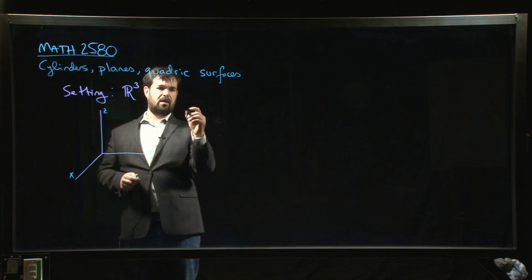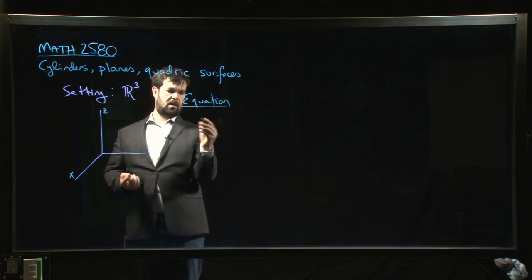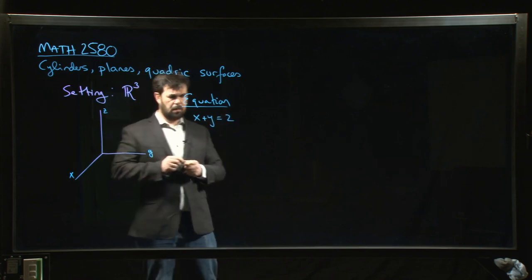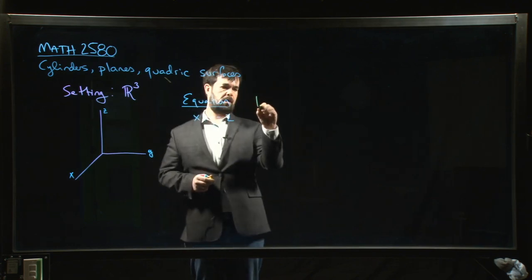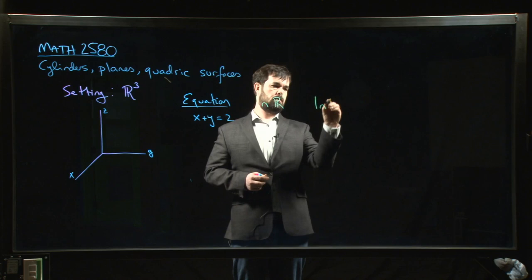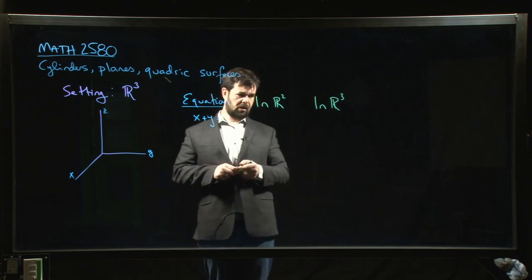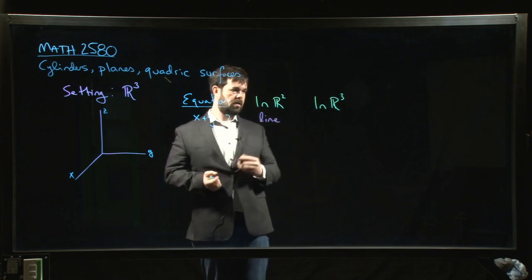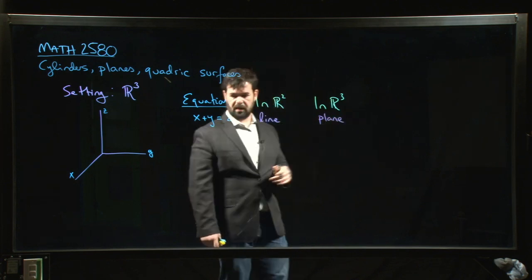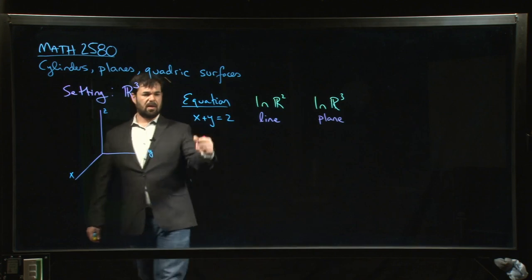Consider an equation like X plus Y equals 2. What does that equation represent? In two dimensions, this is just a line. In three dimensions, it's a plane. This is something that should be familiar going all the way back to Math 1410, your linear algebra course.